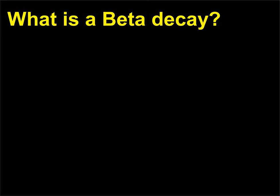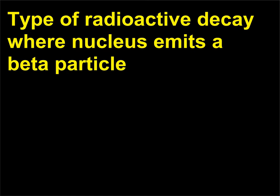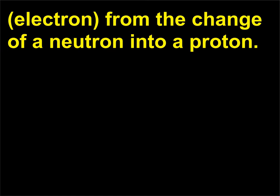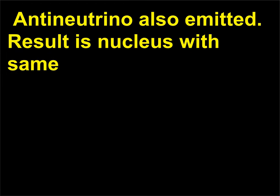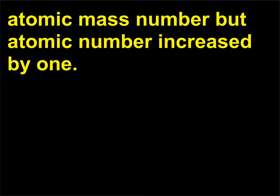What is beta decay? It is a type of radioactive decay where the nucleus emits a beta particle — an electron — from the change of a neutron into a proton. An antineutrino is also emitted. The result is a nucleus with the same atomic mass number but an atomic number increased by 1.